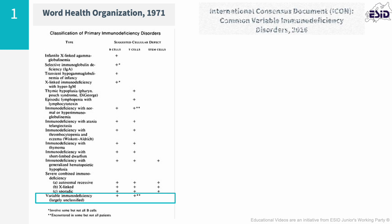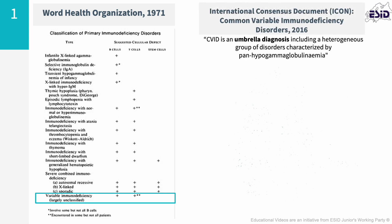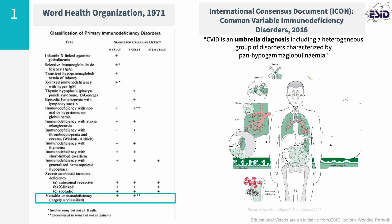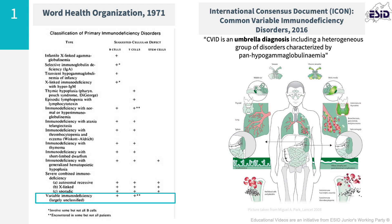Nowadays CVID is considered an umbrella diagnosis which includes a heterogeneous group of disorders characterised by hypogammaglobulinemia, failure of specific antibody responses, and a resultant increased susceptibility to bacterial infections, particularly of the respiratory and gastrointestinal tract. At least one third of patients present with autoimmune manifestations or inflammatory conditions, for example interstitial lung disease or enteropathy. Lymphoproliferative disease and lymphoma are also more prevalent in this population.